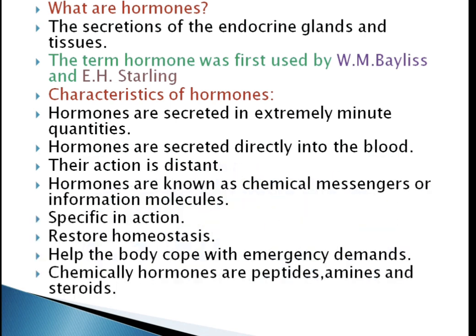What are hormones? The secretions of the endocrine glands and tissues are called hormones. Once a hormone is released into the blood, it is carried to target cells that respond to the hormone. All body cells are target cells for one or more hormones, but not all cells respond to a particular hormone. Hormones are changed functionally and structurally as they are metabolized; they are partially used by the cells and partially excreted in the urine.